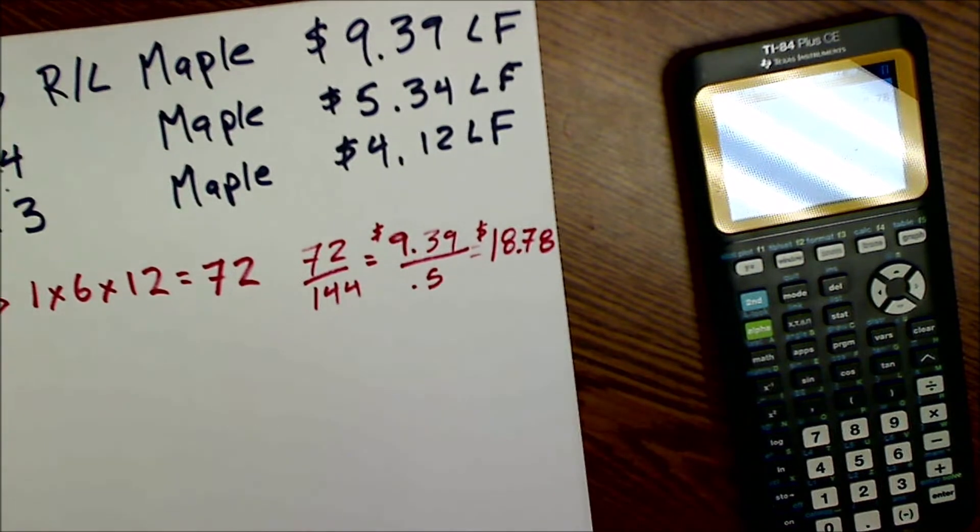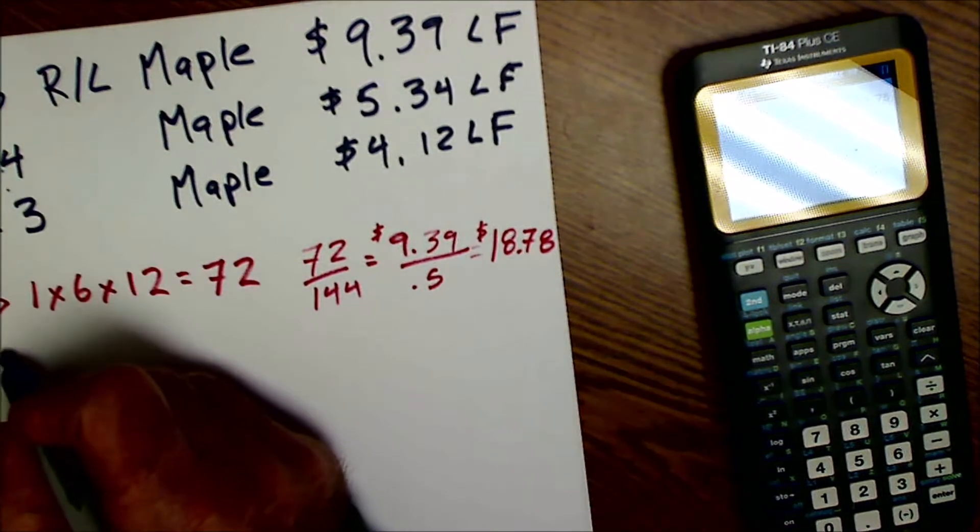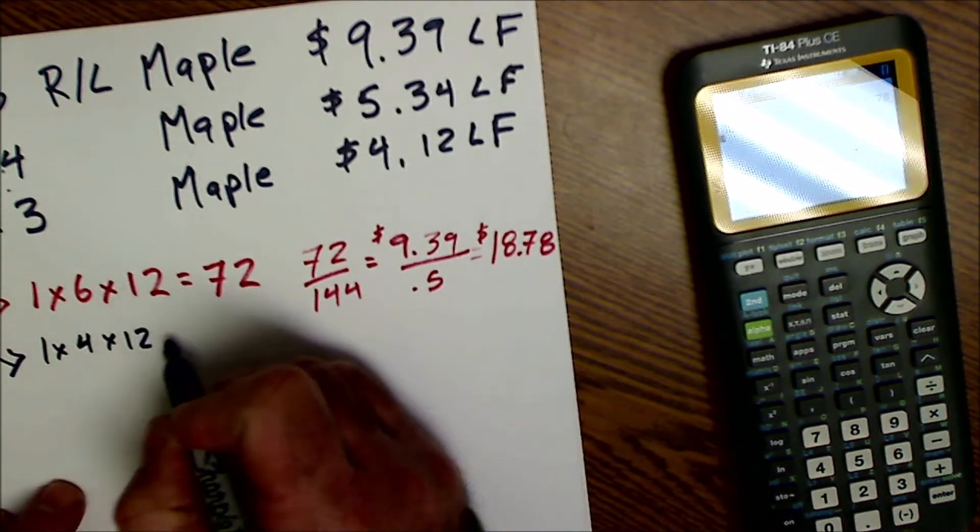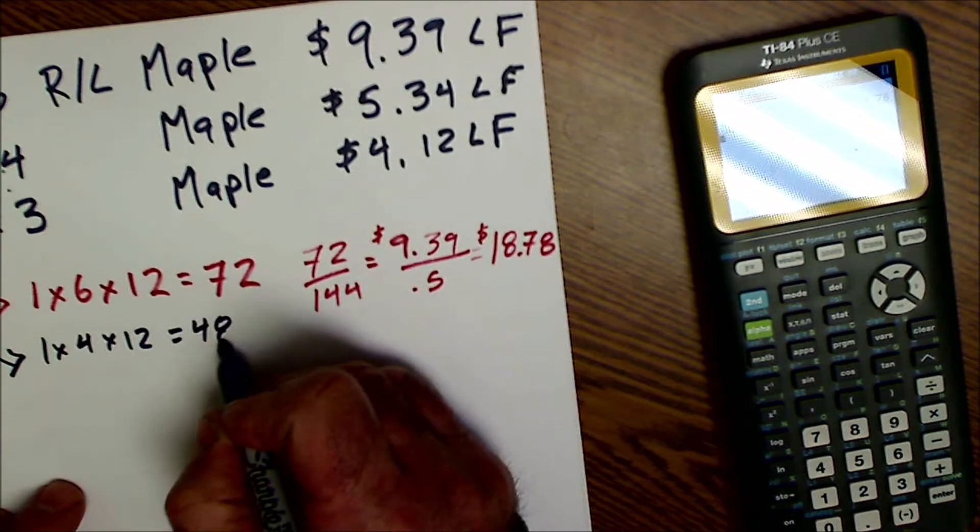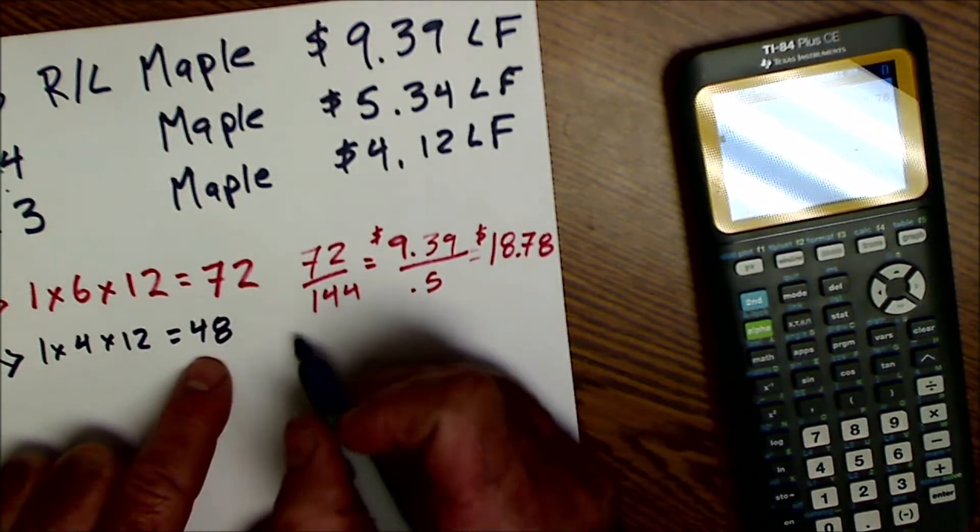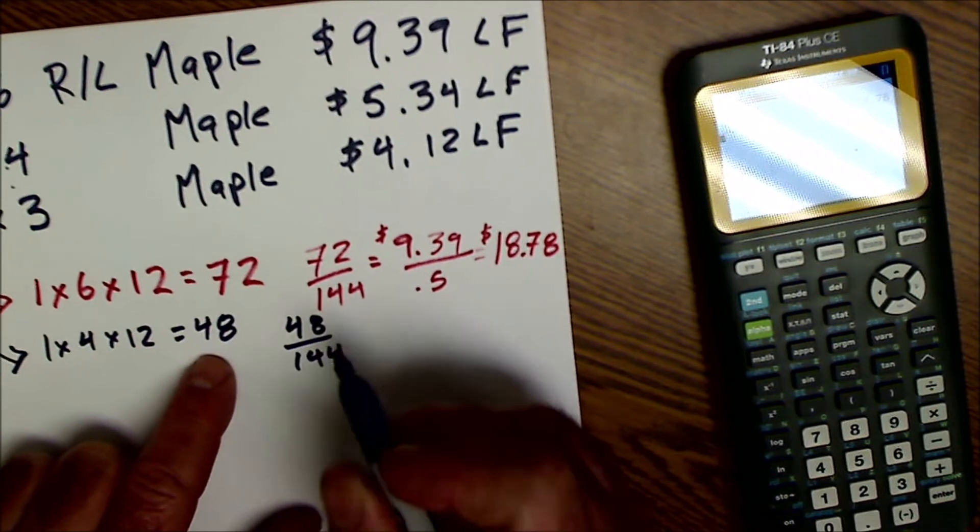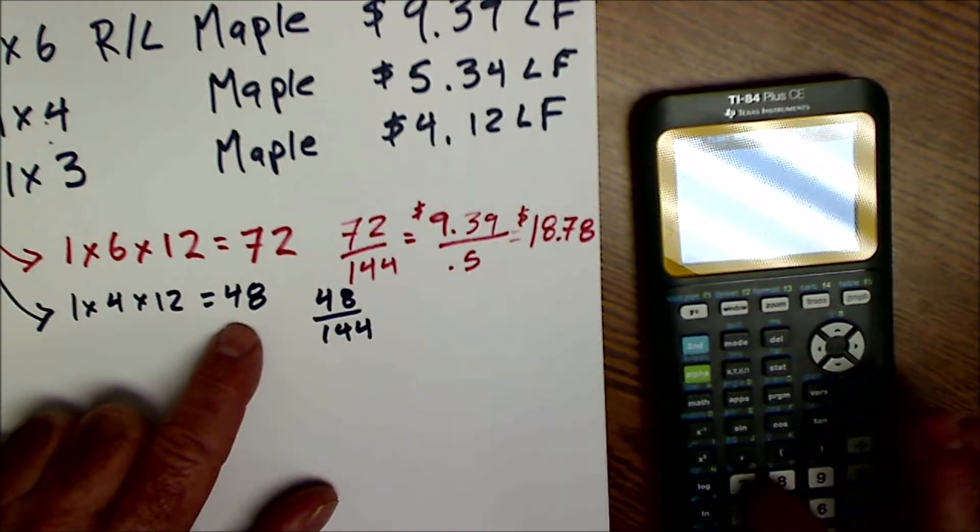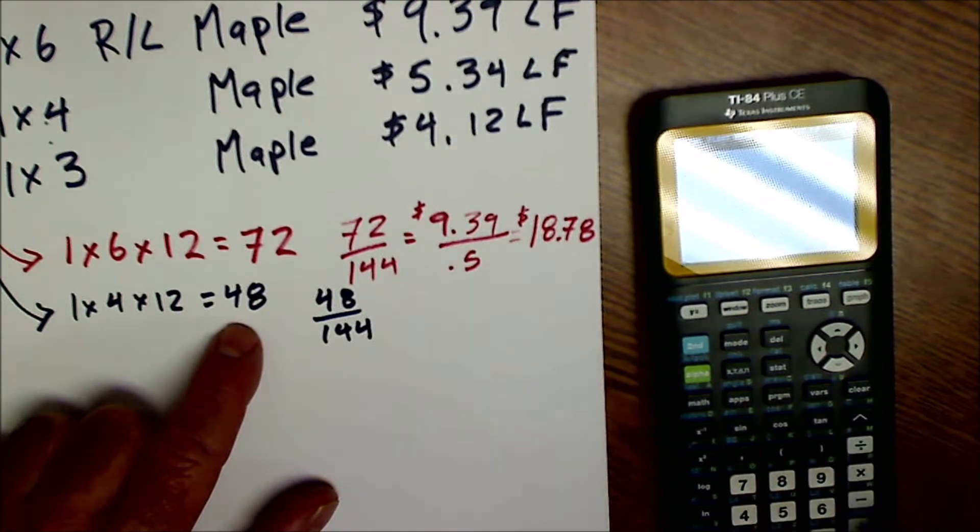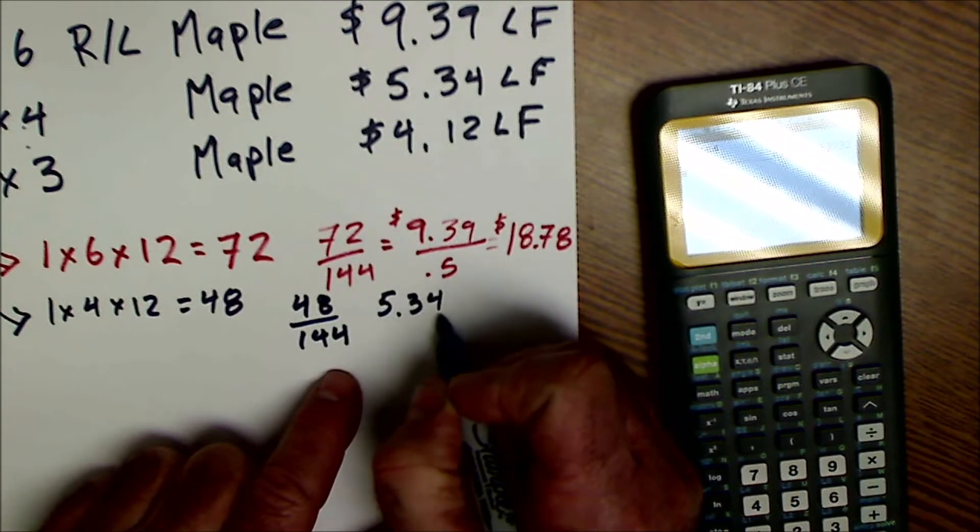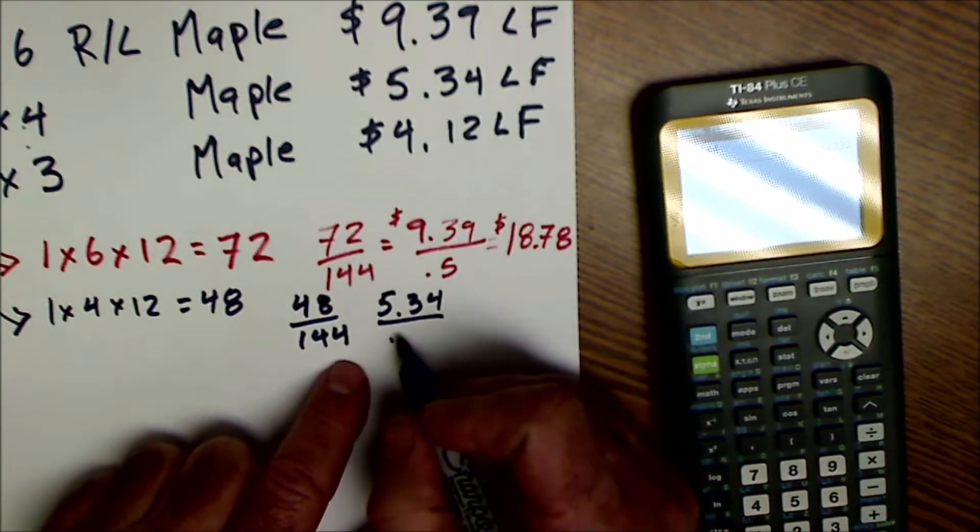Let's go to the next one. It's the same material, and let's see if it's similar pricing or not. This is now 1 by 4 by 12, so it's going to be 48 cubic inches. I do the same 48 divided by 144.